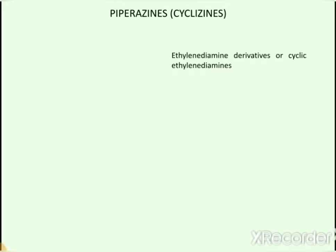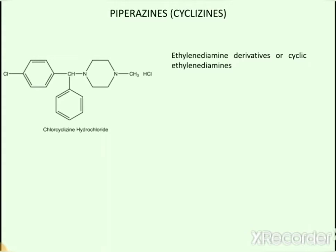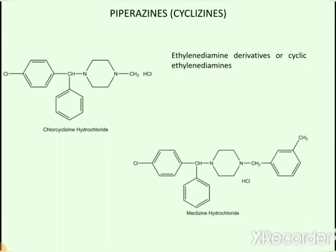The second subcategory of H1 antagonists includes piperazines or cyclizines, which are ethylenediamine derivatives or cyclic ethylenediamines. The first drug of this category is chlorocyclizine hydrochloride, and the next one is meclizine hydrochloride.